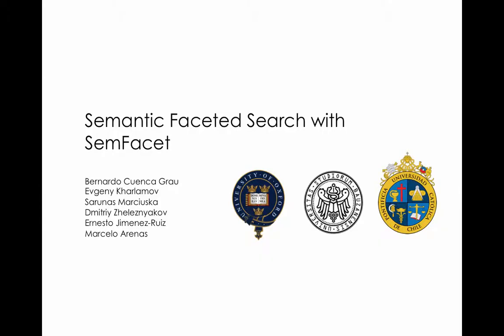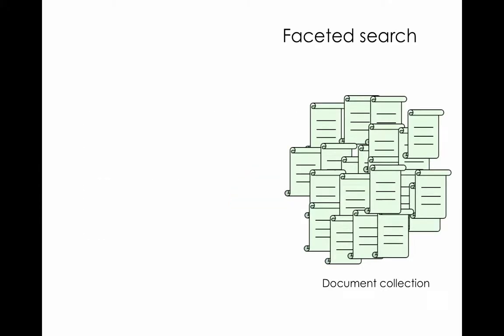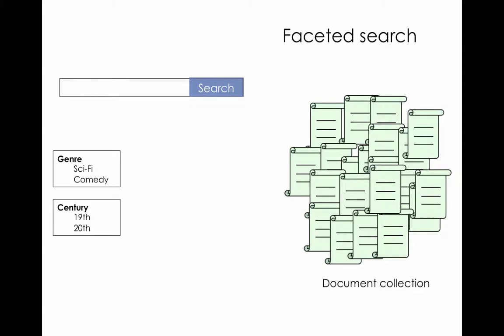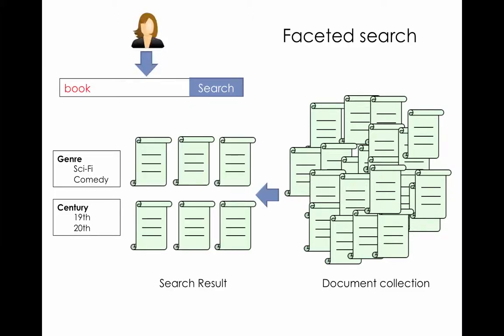We will demonstrate to you SamFacet, a system for faceted search. Faceted search is a technique for accessing document collections that combines text search and faceted navigation applied to the document's metadata. The search typically starts when the user enters keywords and the system extracts the initial set of documents matching them. Then the user can narrow down the set by incrementally applying multiple filters, called facets.